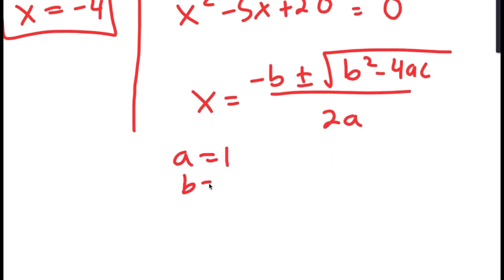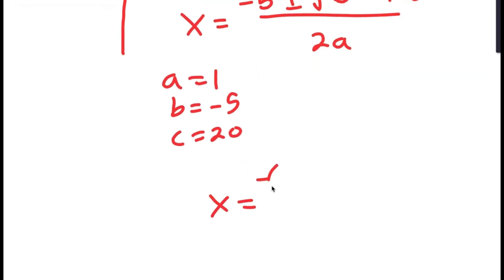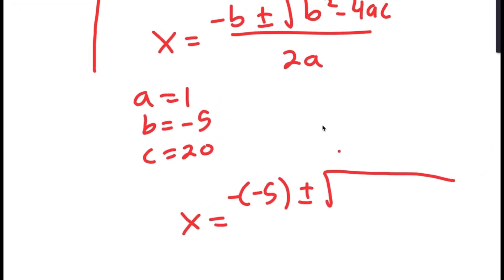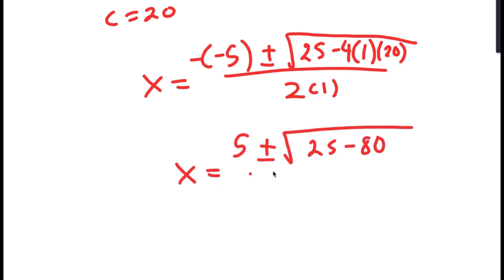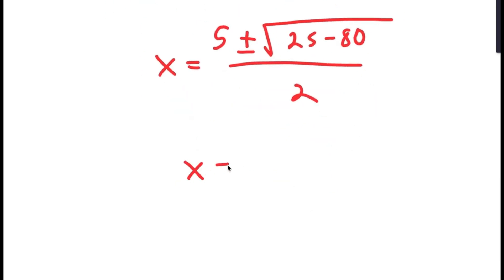In this case, a is 1, b is negative 5, and c is 20. So I get x is equal to the negative of negative 5, plus or minus the square root of negative 5 squared — which is 25 — minus 4 times 1 times 20, all over 2 times 1. This simplifies to 5 plus or minus the square root of 25 minus 80 over 2, which equals 5 plus or minus the square root of negative 55 over 2.